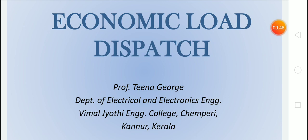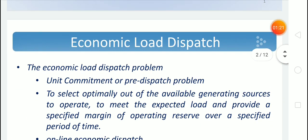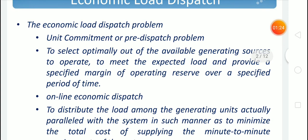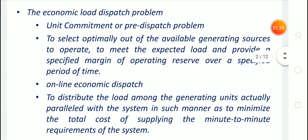Economic load dispatch mainly consists of two problems: the unit commitment problem and the online economic dispatch or cost minimization problem. The unit commitment problem is a pre-dispatch problem — we use load data from previous years to schedule generation. The online economic dispatch problem is done according to current data. So the two problems are unit commitment (pre-dispatch) and online economic dispatch.